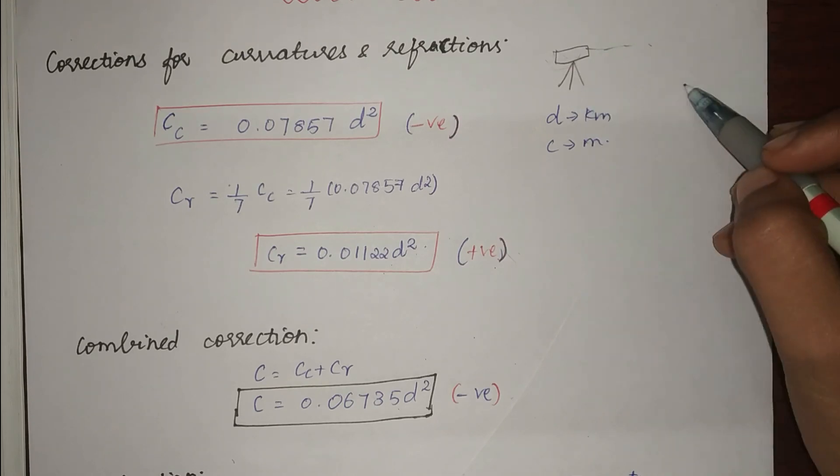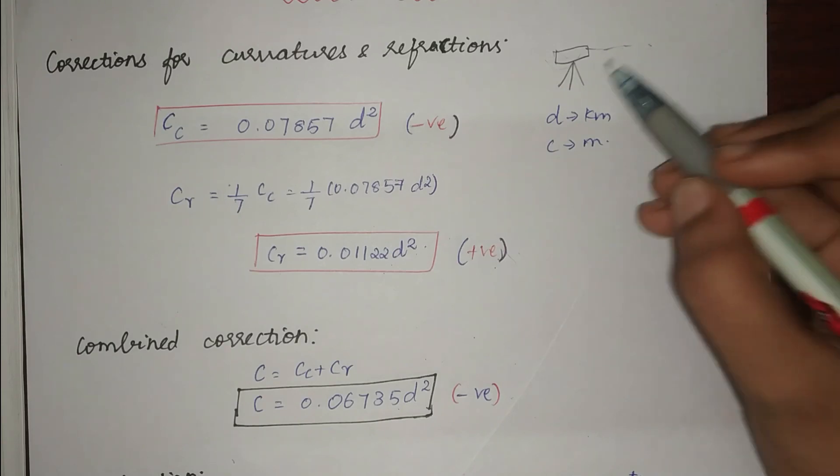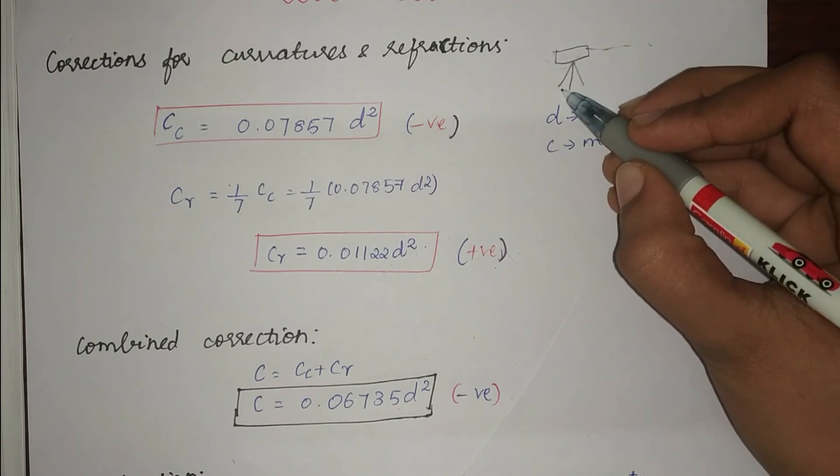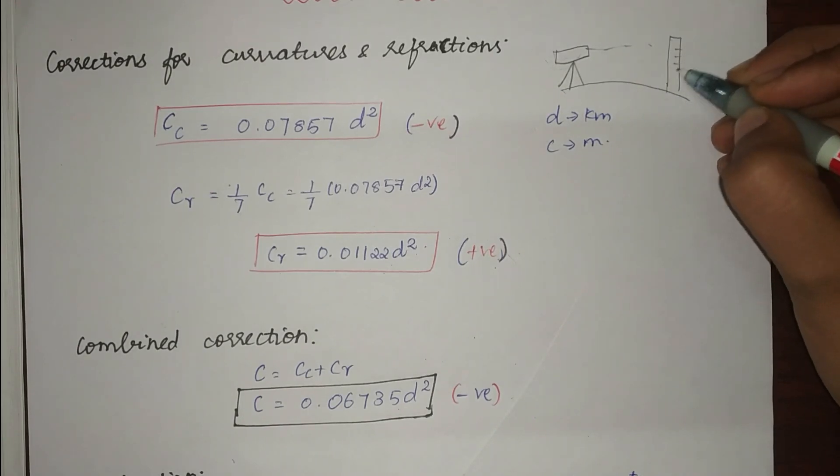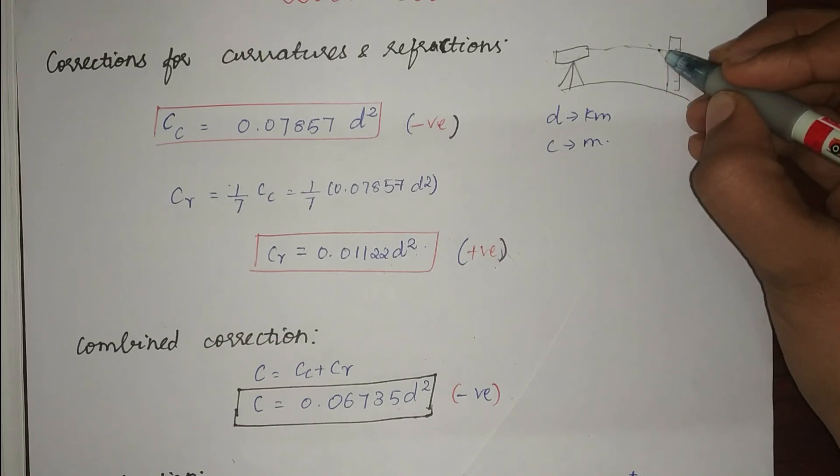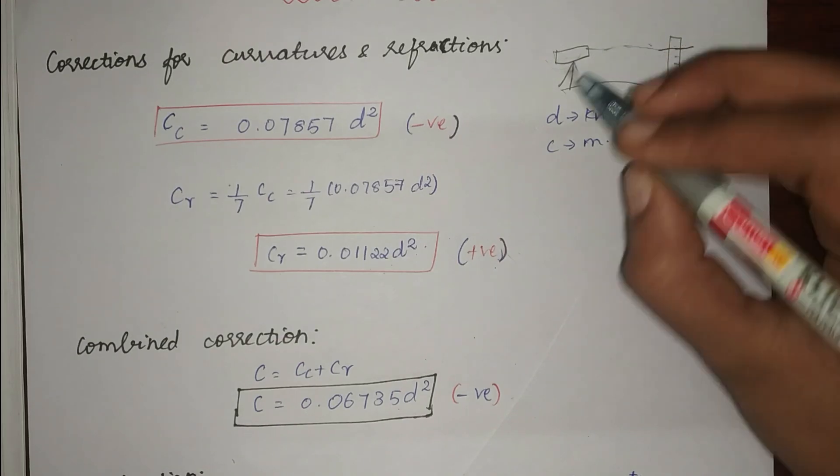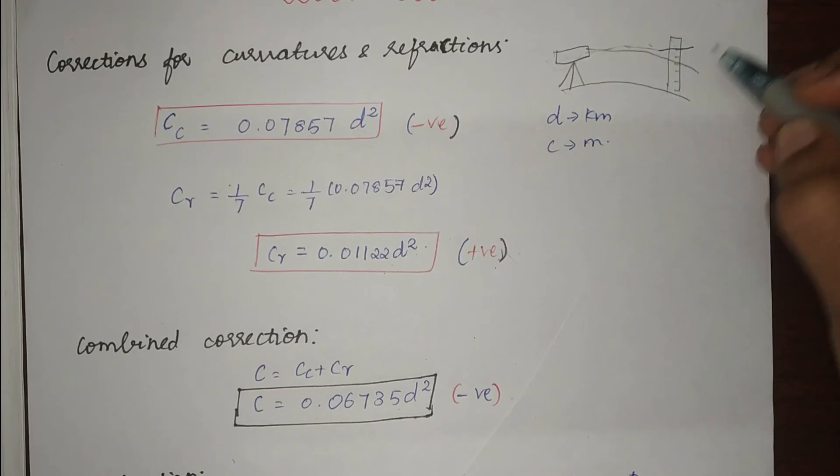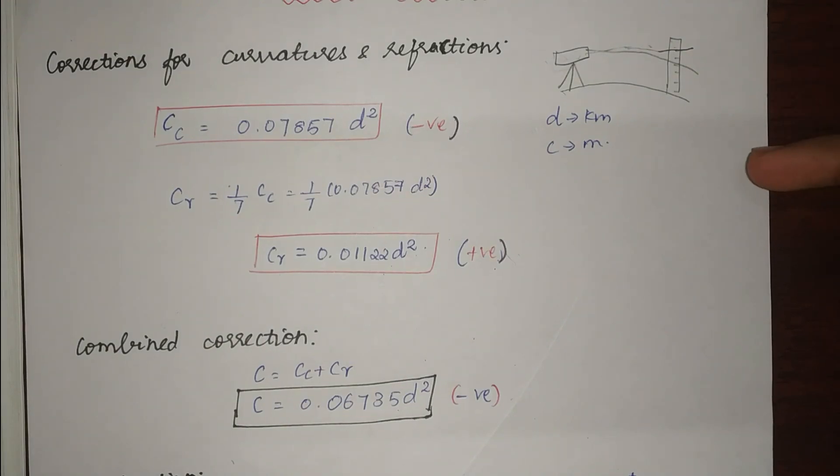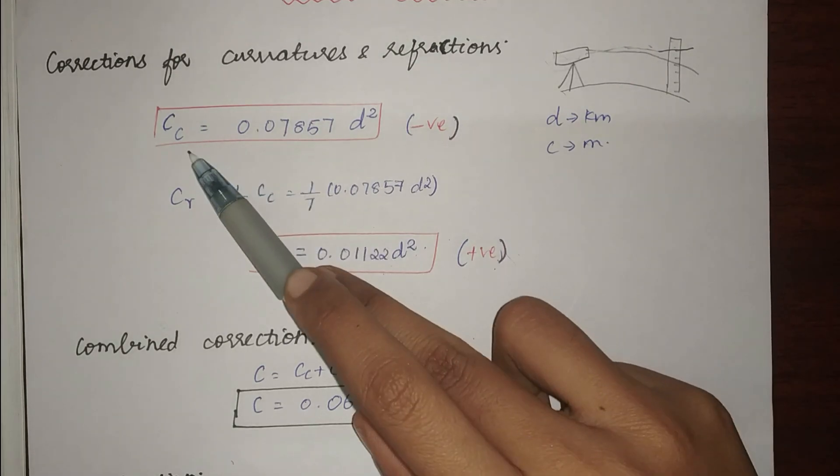We know that the earth is not flat. The earth has a curvature. So whenever we take a reading from a leveling instrument, our earth is going to be like this. Our reading staff is going to be like this and our reading will be somewhere here. But the original reading has to be this. So there will be some corrections we have to undertake because of the curvature of the earth. So that is what we call the curvature correction.